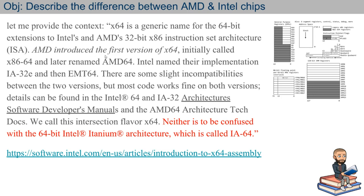x64 is a generic term for the 64-bit extensions to Intel's and AMD's 32-bit x86 instruction set architecture. AMD introduced the first version of x64 — which is kind of ironic because Intel was the first to create the x86 architecture, which was originally 16-bit. But AMD was the first to get to 64-bits.